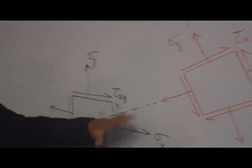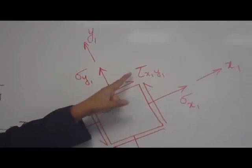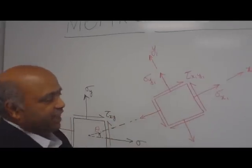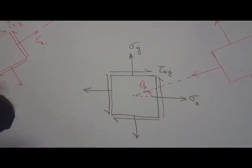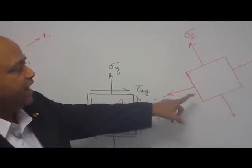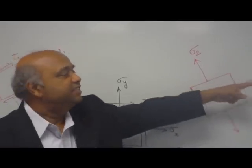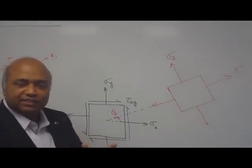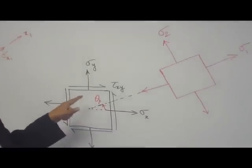In the rotated x1-y1 system, we have normal stresses sigma x1 and sigma y1, and shear stress tau x1y1, which explains what happens to the nature of the stress. Now, if the rotation angle equals the principal angle theta p, it is very interesting to observe that on the new rotated element, you have only normal stresses sigma 1 and sigma 2 — there is no shear stress. These are called the principal stresses: sigma 1 and sigma 2 are the maximum and minimum stresses, and that angle is called the principal angle, theta p.